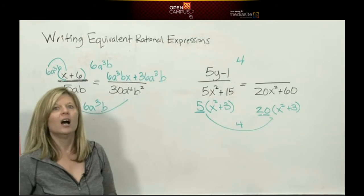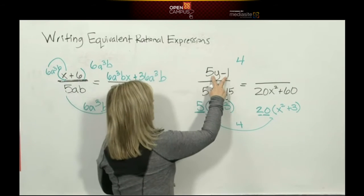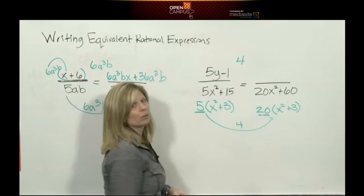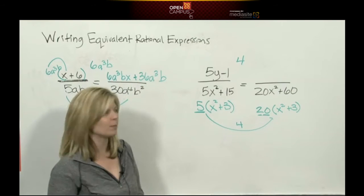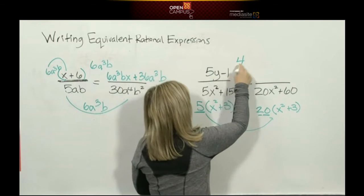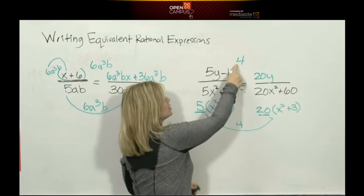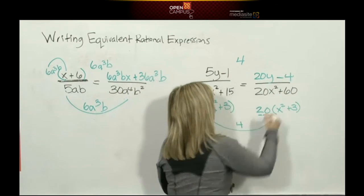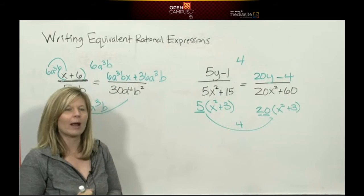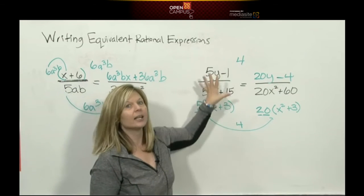Again, you have a binomial times a monomial, which means you have to distribute. 5y times 4 is 20y. Negative 1 times 4 is negative 4. And there is your new numerator. You have just created equivalent fractions.